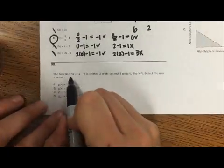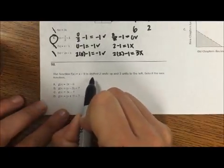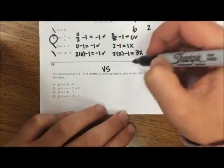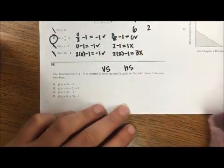Alright. The function f of x equals x minus 9 is shifted 2 units up, vertical shift, and 3 units to the left, horizontal shift. Select the new function.